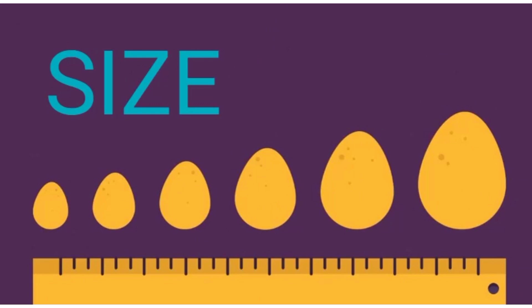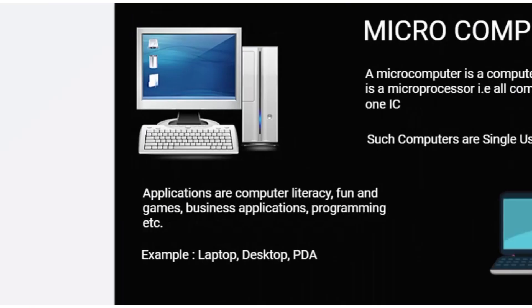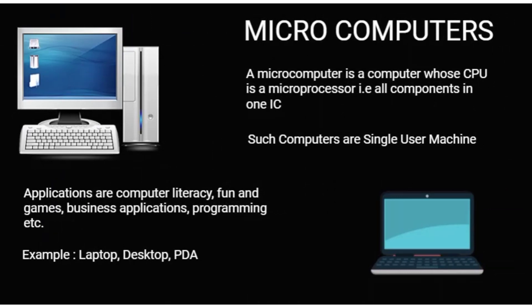The next category is size. With respect to size, we divide computers into four categories. The first is the microcomputer, also known as the personal computer, because it is a single-user machine — meaning only one user can use it at a time. It has basic functionalities and configurations. Examples include laptops, desktops, and PDAs.